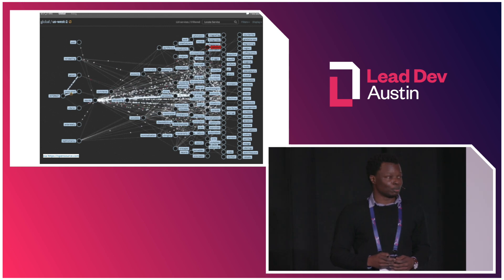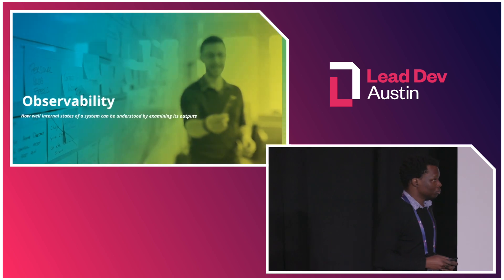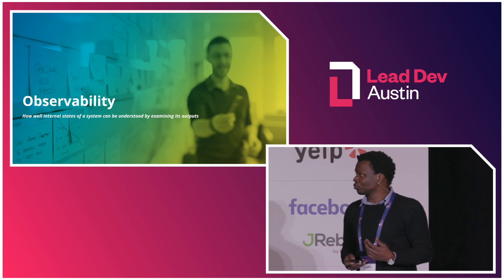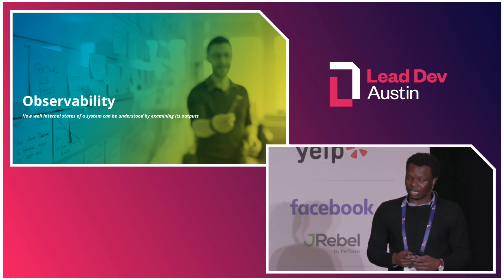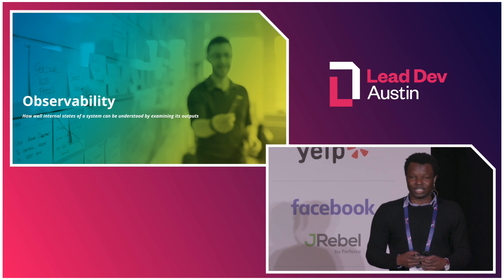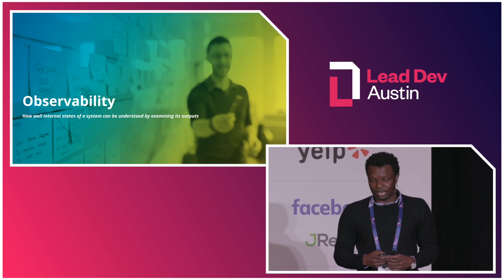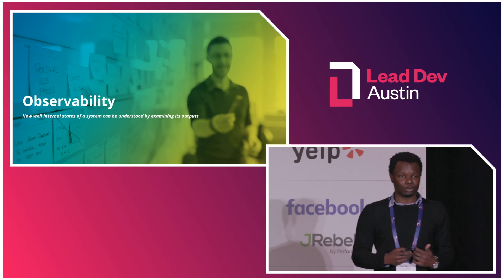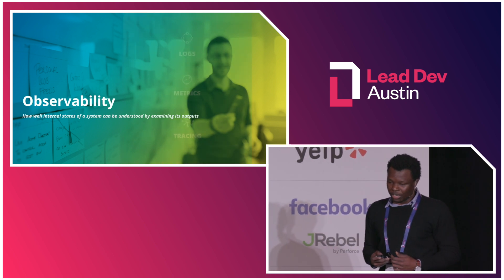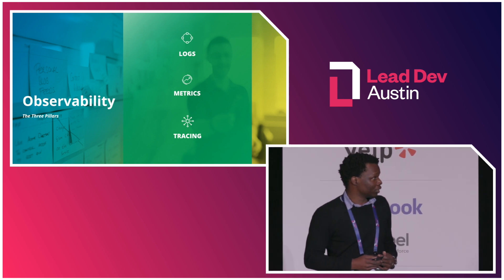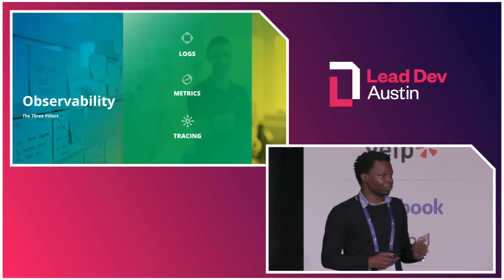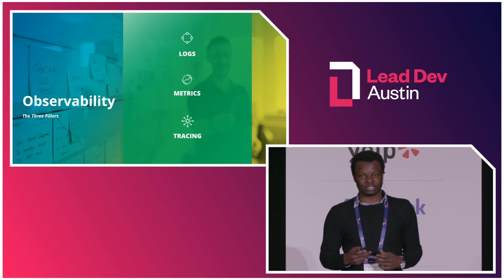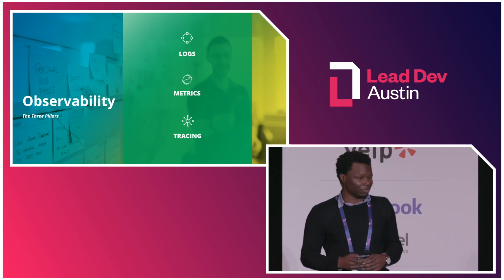Thankfully, observability promises to help us out. So what is observability? Observability is a measure of how well the internal state of a system can be understood by examining its outputs. It's a term that originated from control theory, and the general idea is that if we can capture and analyse data from our systems about their operation, then we should be able to understand how they're working. So what kind of data is this? The kind of data you typically look at — sometimes called signals — usually falls in three categories.